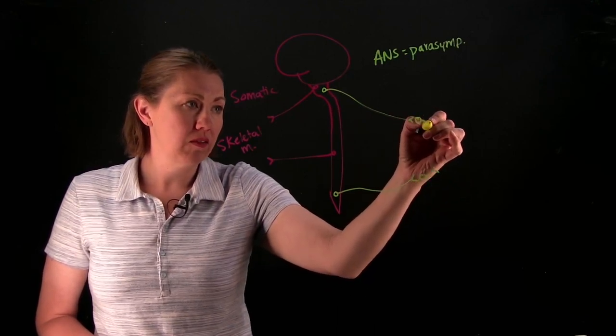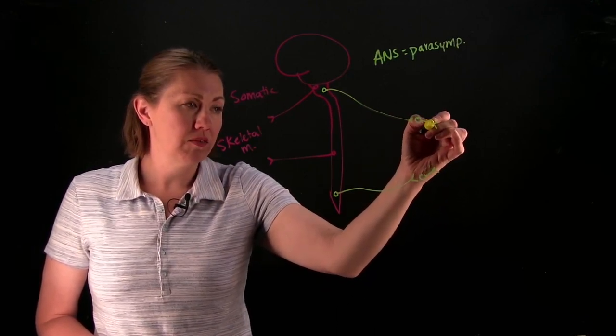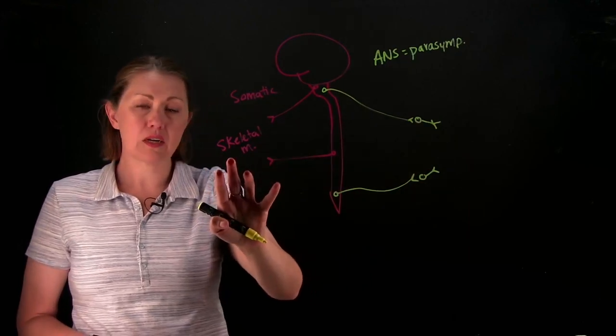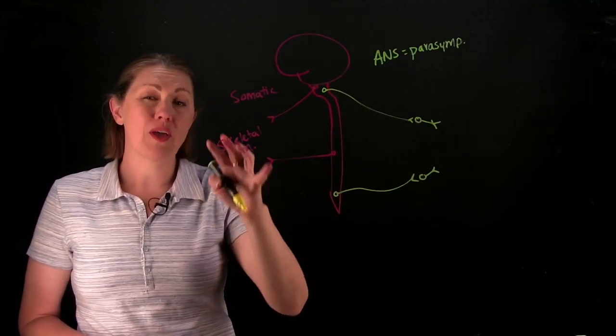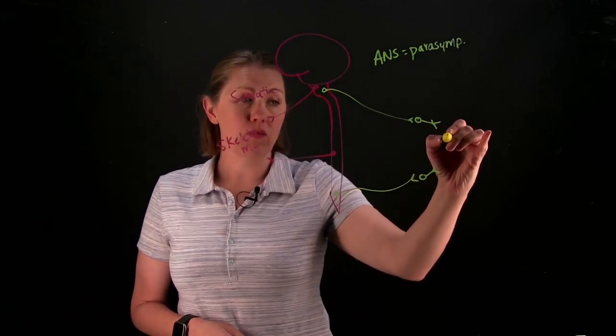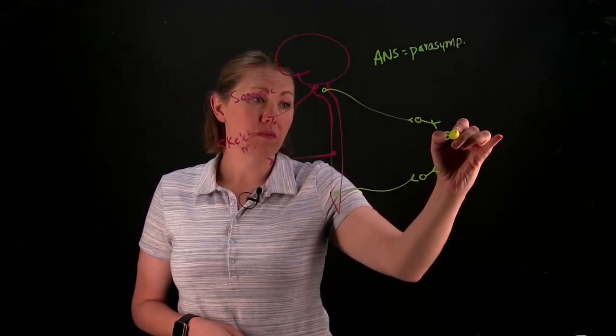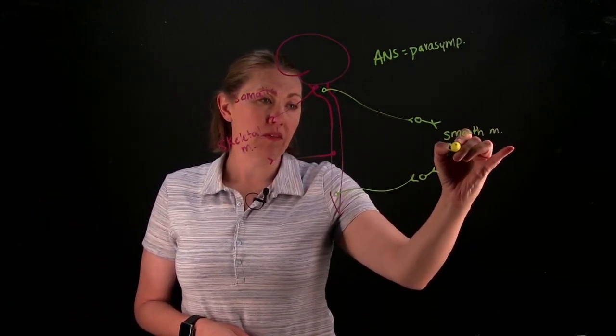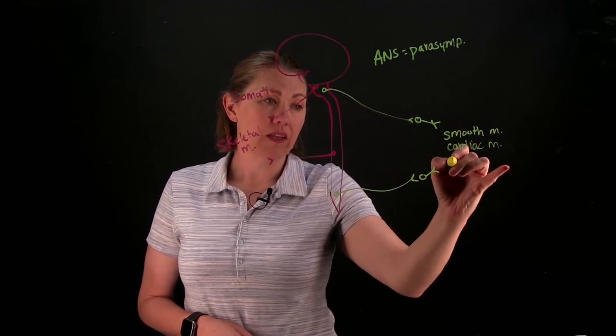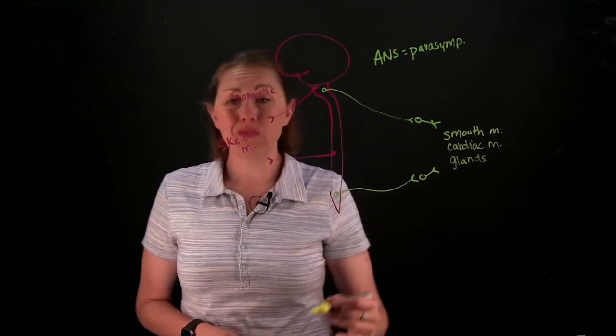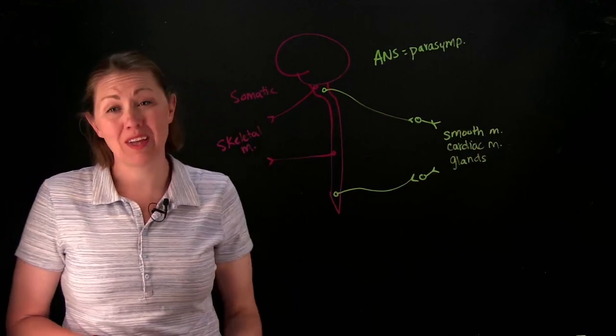The targets are different than what we saw over here. They're the targets that you can't consciously control. Your effectors would be things like smooth muscle, cardiac muscle, and glands. All stuff you can talk to and control, but you just can't do it consciously.